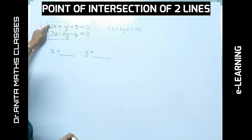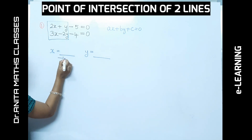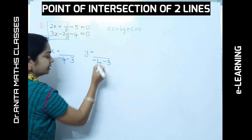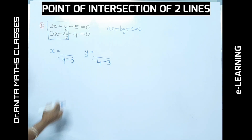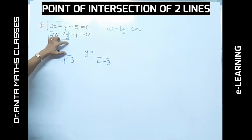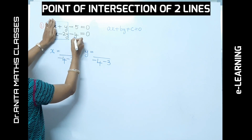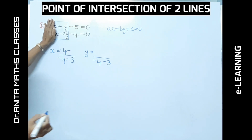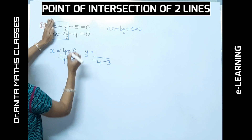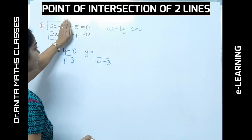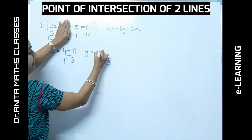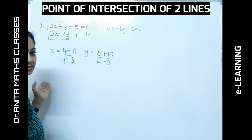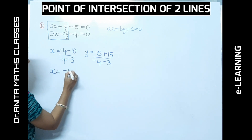Cross multiply to get the denominator: 2 × (−2) = −4, and (−3) × 1 = −3, giving denominator −7. The same denominator applies to both coordinates. To find x, hide the x-coefficients and cross multiply: (−4) × (−2) gives terms leading to a numerator of −14.